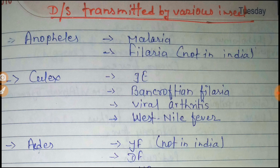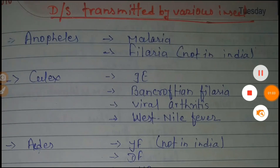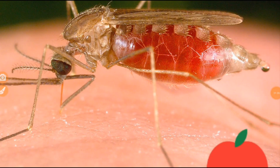Let us start first with the female Anopheles mosquito. It transmits two types of disease — mainly malaria, but outside India it also transmits filaria. The image of the female Anopheles is shown here. This is a commonly asked image-based question, so please recall it so you can remember it.